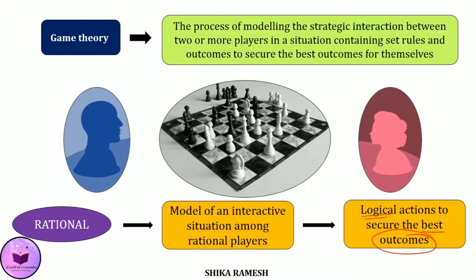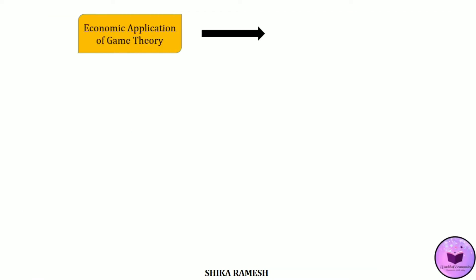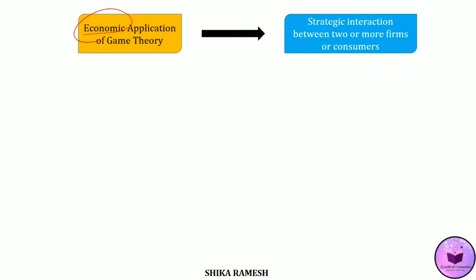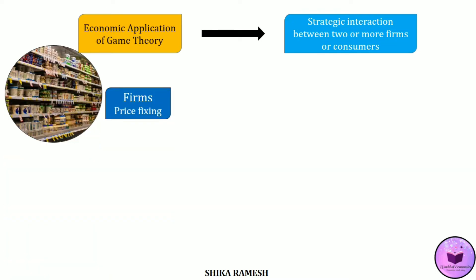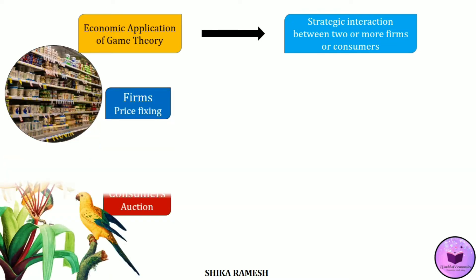Game theory is used in a wide number of disciplines. When it comes to economics, game theory is basically used as a tool to determine the strategic interaction between two or more firms, consumers, or any economic agents. For example, price competition among firms or consumers bidding against each other at an auction for a piece of art or painting.